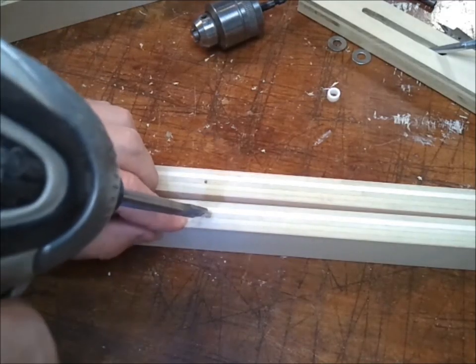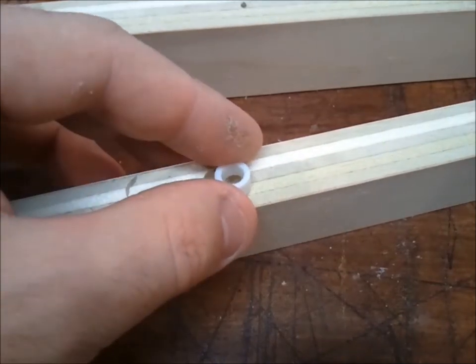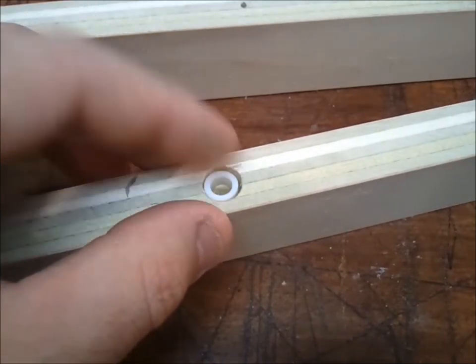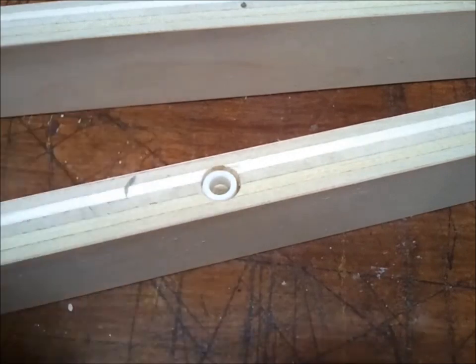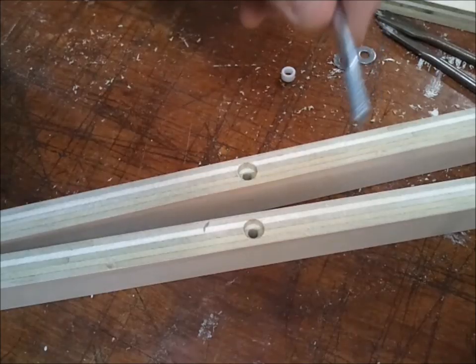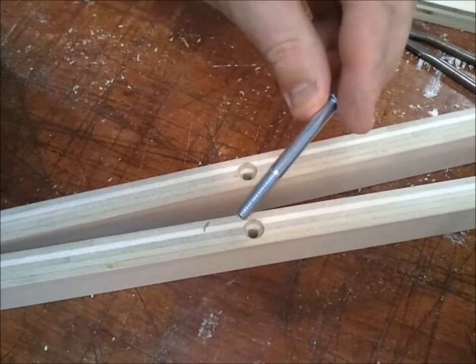On the bottom of each rail, I'm going to make a small countersink. I made it just deep enough to accept this little PVC spacer that I made. I'll show you what that's for in a second. Now the hole size can be increased to accept this bolt.